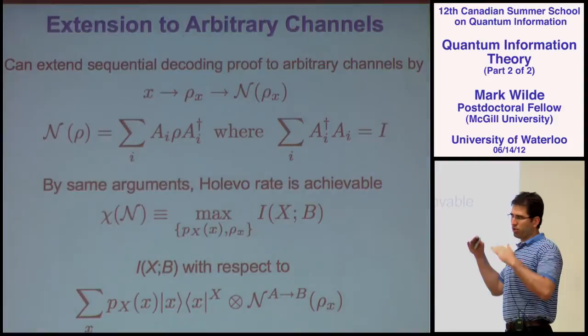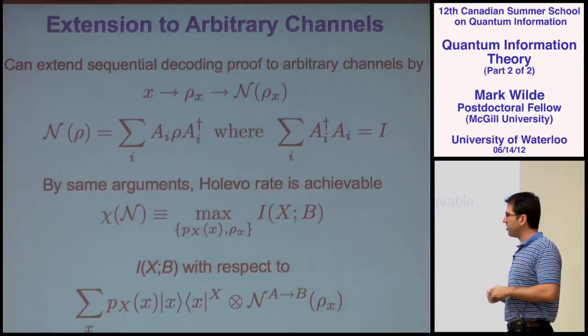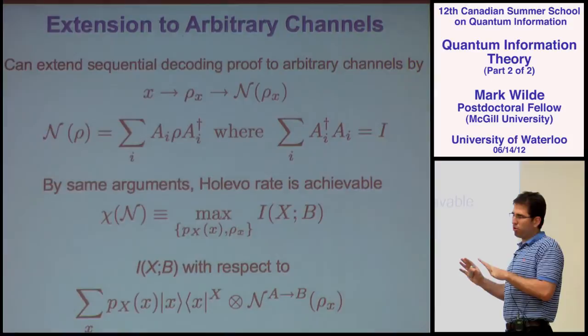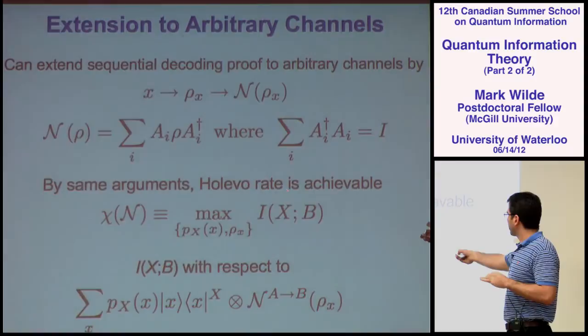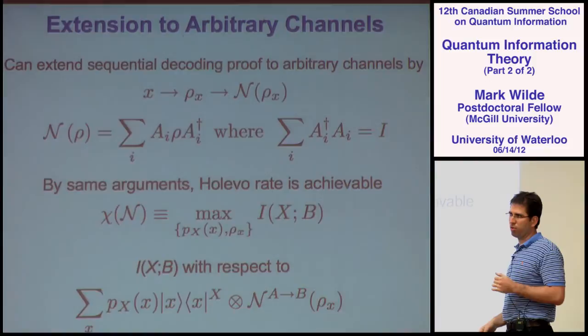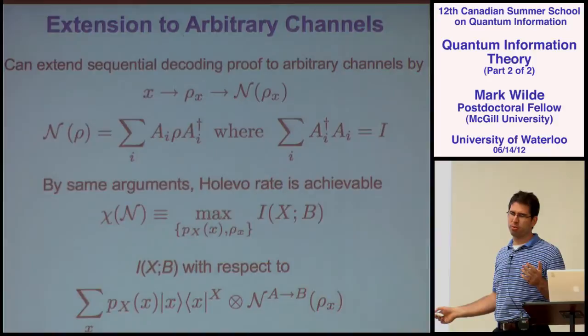So random coding establishes the code; sequential decoding is the procedure. There exists a measurement that Bob can do to recover messages that Alice sends, as long as the rate of communication is approximately the Holevo information. And that's something we're going to use to get codes for private classical communication.